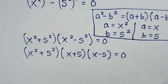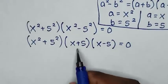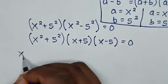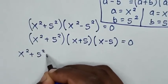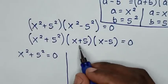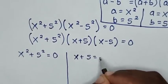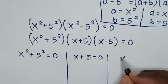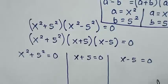Then in the next step, from this equation we have three solutions. The first solution is x squared plus 5 squared equals 0. The second solution is x plus 5 equals 0. And the third solution is x minus 5 equals 0.